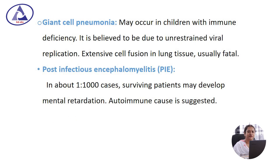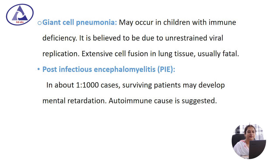Measles pneumonia may be of two types: secondary bacterial pneumonia, which we discussed previously, and another type is giant cell pneumonia. Giant cell pneumonia may occur in children with immune deficiency; it is believed to be due to unrestrained viral replication. Here, extensive cell fusion in the lung tissue turns into a fatal outcome.